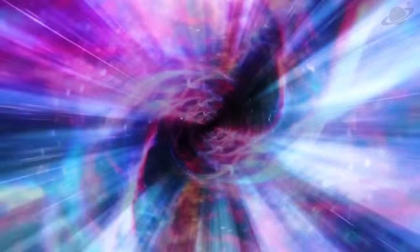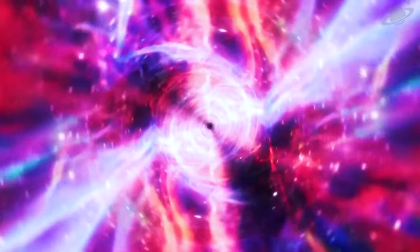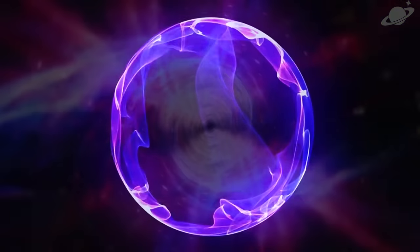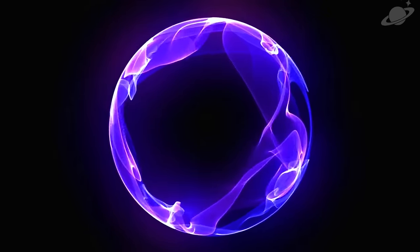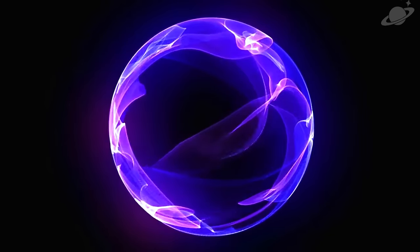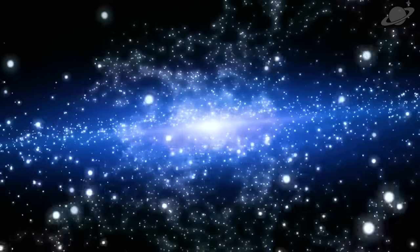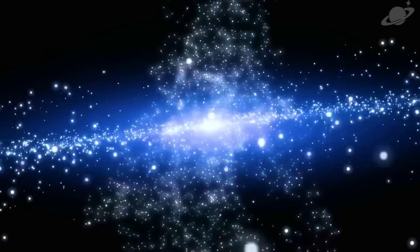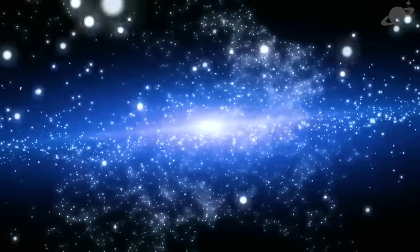Currently, there are two main ideas explaining how black holes form. The first, and most widely accepted, theory suggests that when a massive star reaches the end of its life, it collapses in on itself, forming a black hole with a mass of up to around 100 times that of the Sun. Over time, this black hole can grow larger by consuming nearby matter, eventually becoming supermassive, with a mass millions to billions of times greater than that of the Sun.